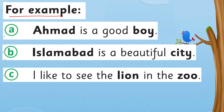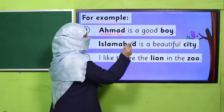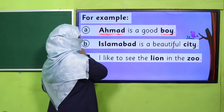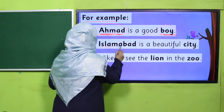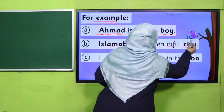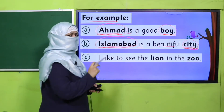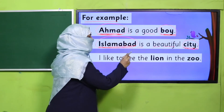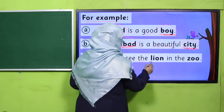Let's take a few example sentences. 'Ahmad is a good boy.' Ahmad is a naming word referring to a boy, so 'boy' is also a noun and 'Ahmad' is also a noun — both refer to a person. 'Islamabad is a beautiful city.' City is a common noun and Islamabad is a particular one. Both 'city' and 'Islamabad' are nouns. 'I like to see the lioness in the zoo.' Zoo is a noun for place and lioness is a noun for a living thing.